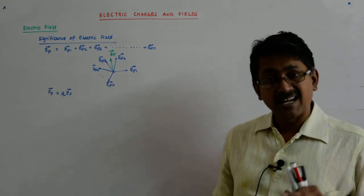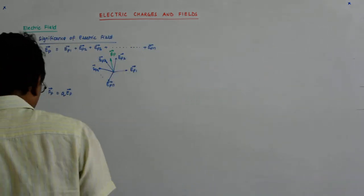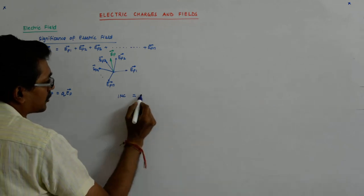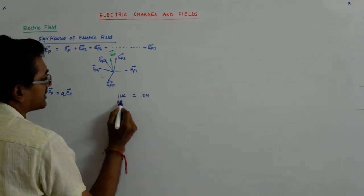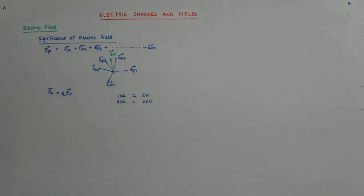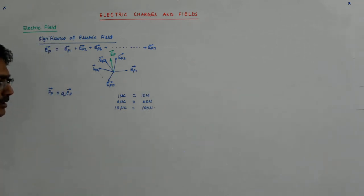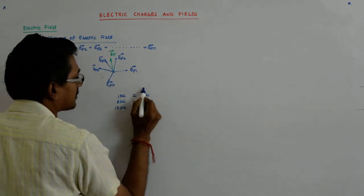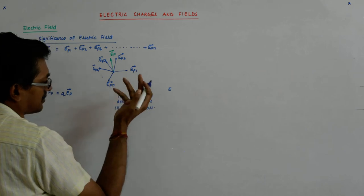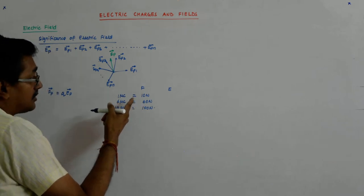So what has happened is that the electric field is the characteristic of the system of charges, independent of the test charge, while force depends on the test charge. Suppose at this point someone with one microcoulomb reports a force of ten Newtons, then someone with six microcoulombs will report a force of sixty Newtons, and someone with ten microcoulombs will report a force of hundred Newtons. But what electric field will everyone report?